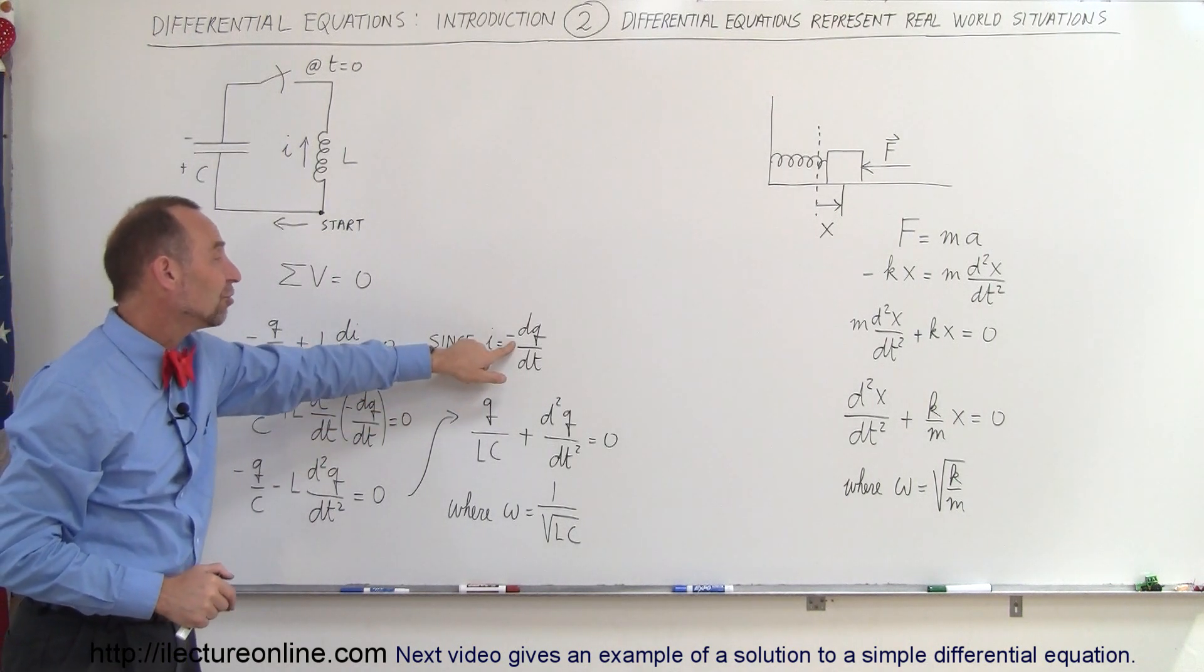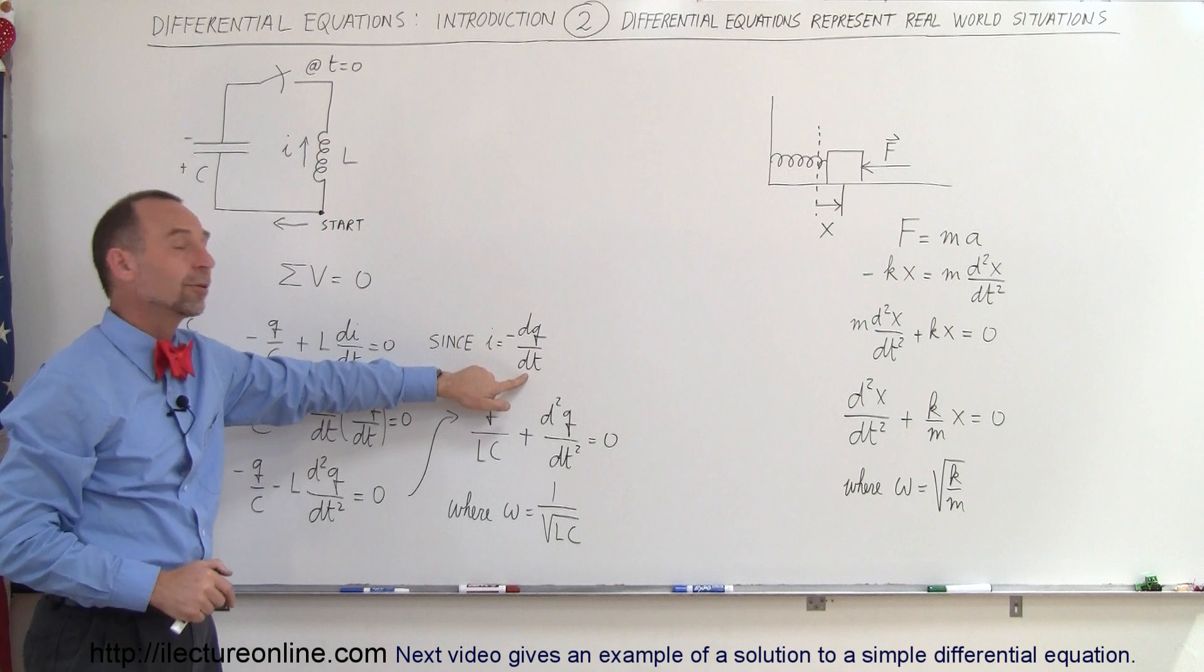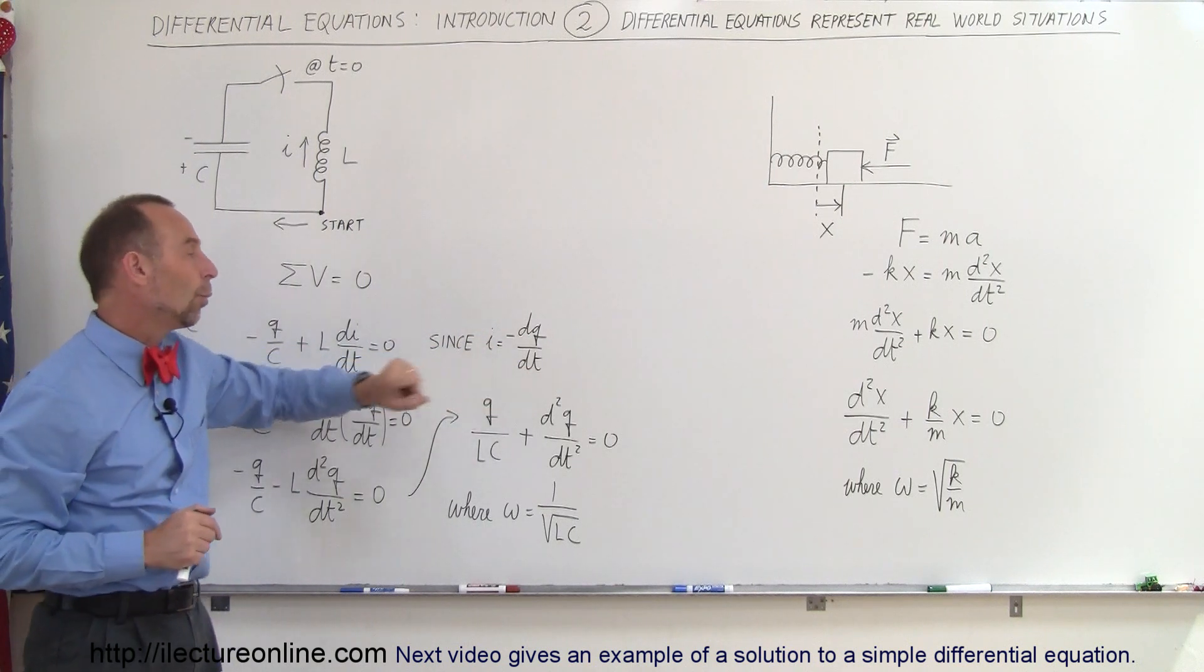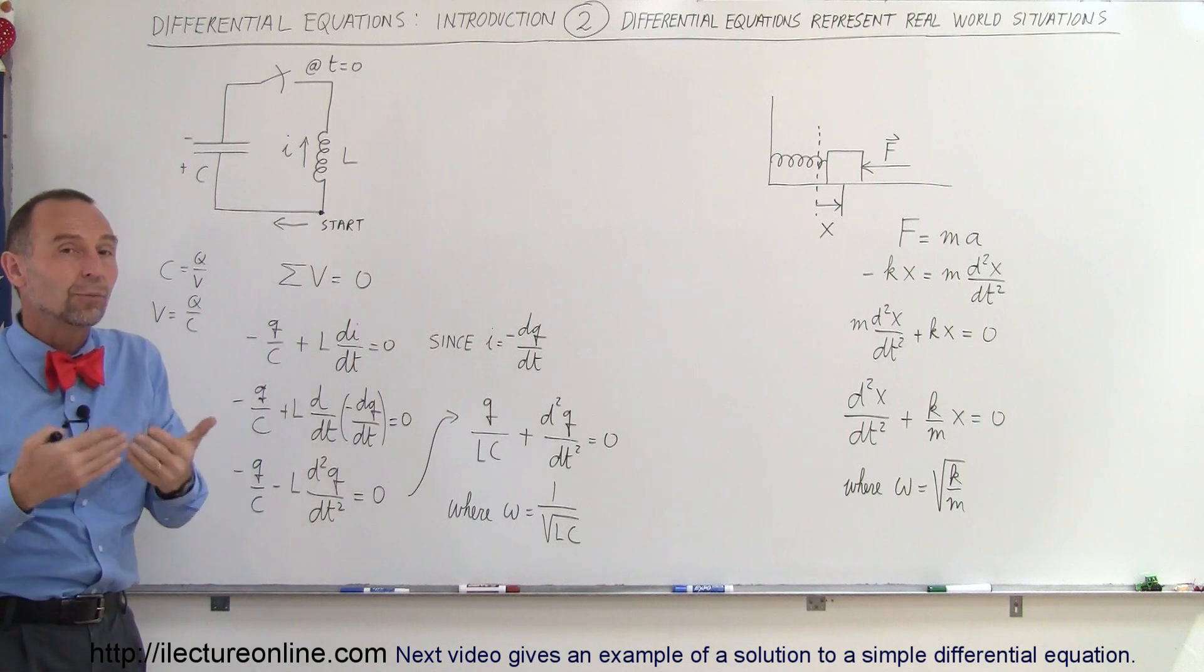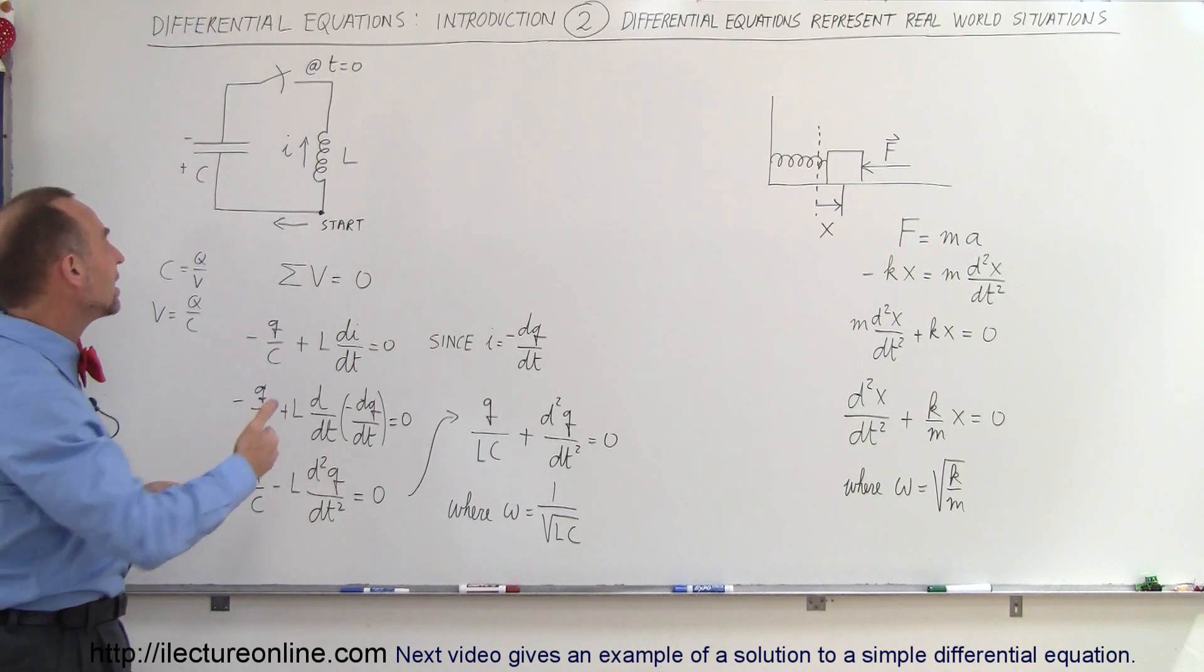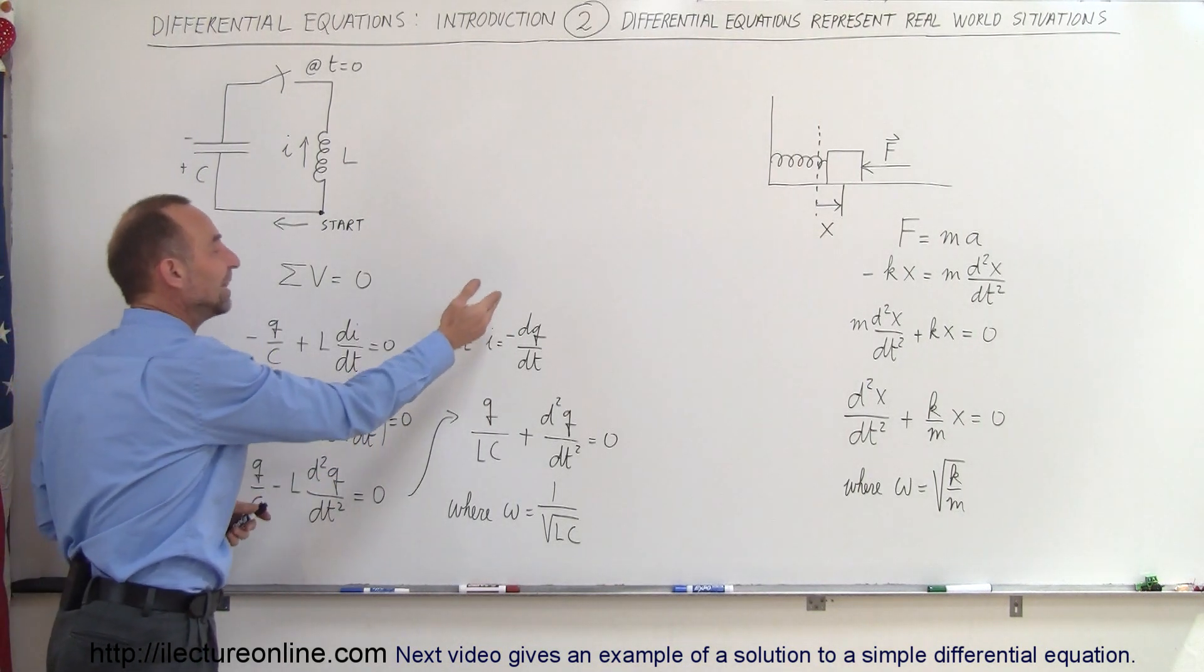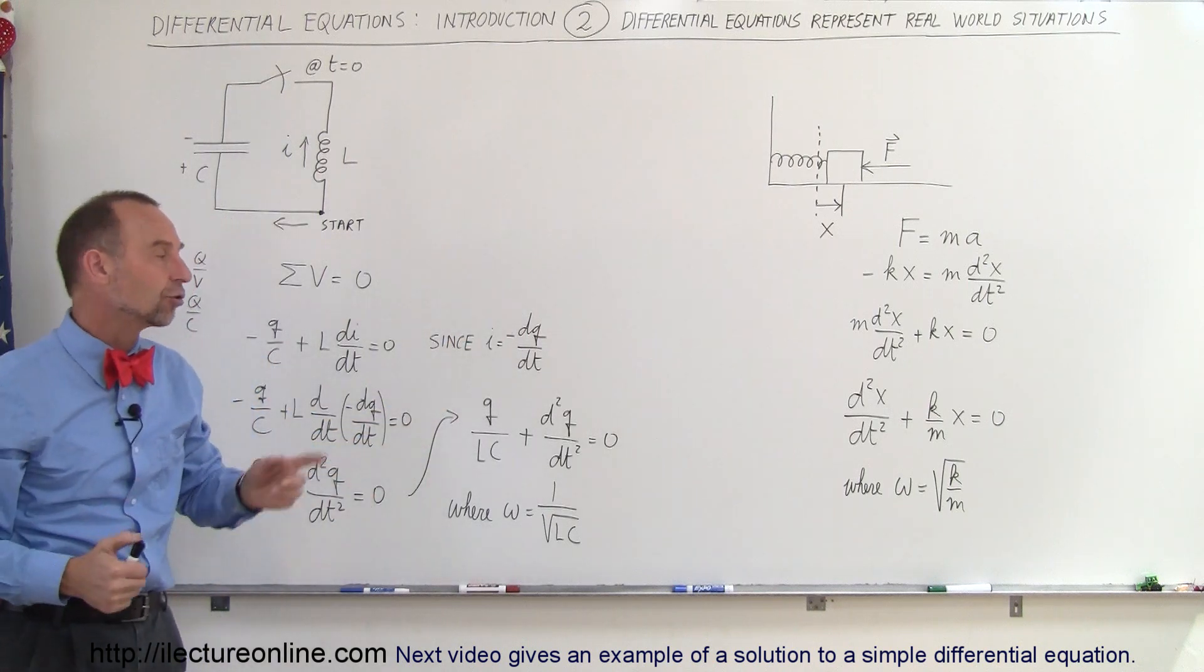Also note, that I is equal to the negative change of the charge across the capacitor divided by time. Why do we know that? Because the capacitor is discharging, so therefore the current represents how fast the capacitor is discharging, which is a negative change in the charge over time.